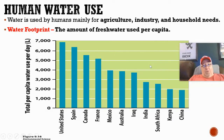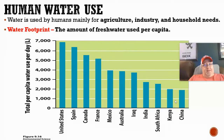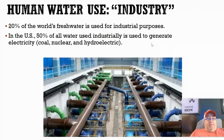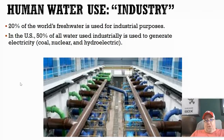If you live somewhere else, like in Kenya or China, a lot less water is utilized per day because the average lifestyle of someone living in Kenya is much different from somebody living in the United States. Of all the fresh water in the world — that 3% — 20% is used for industrial purposes, manufacturing.